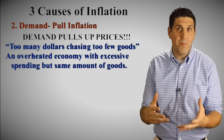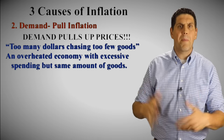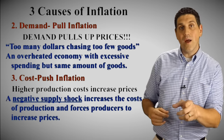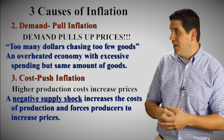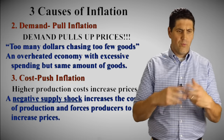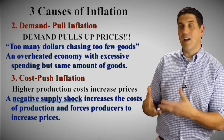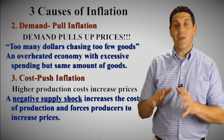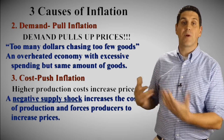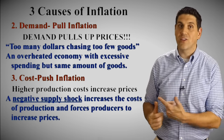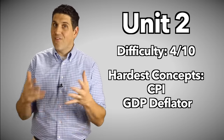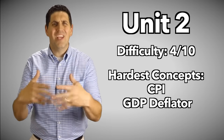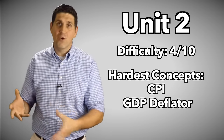The other two causes of inflation are demand-pull and cost-push. Demand-pull is when demand goes up — people want to buy a lot more stuff and bid up the price. Cost-push is when resource costs rise, so it costs more to produce stuff and less is produced, causing prices to go up. Either demand goes up or you can't produce as much — either one causes prices to rise. Overall, unit two is not that difficult — I give it four out of ten difficulty — but the concepts are absolutely essential. You have to understand the types of unemployment and GDP; if you don't get these, you won't get future concepts.